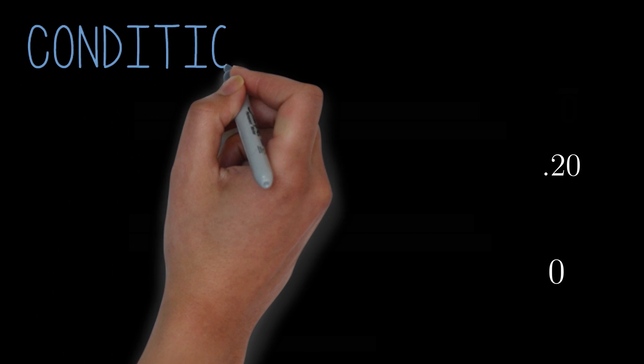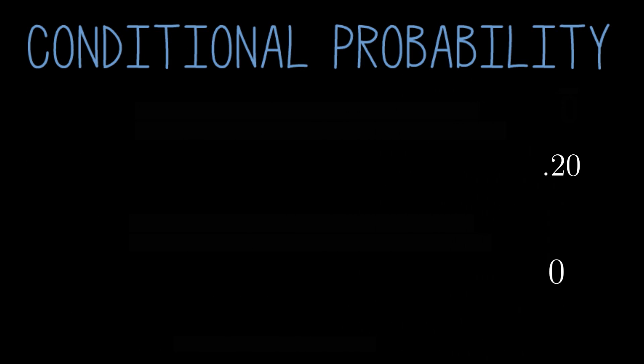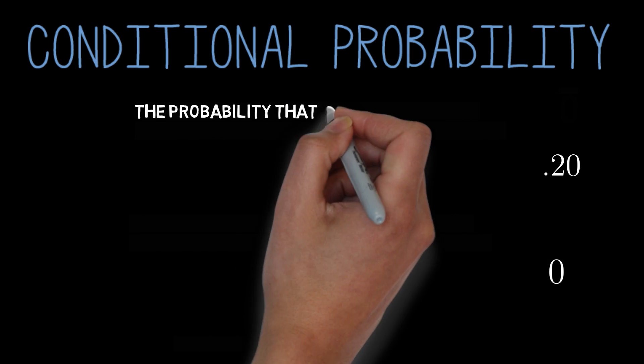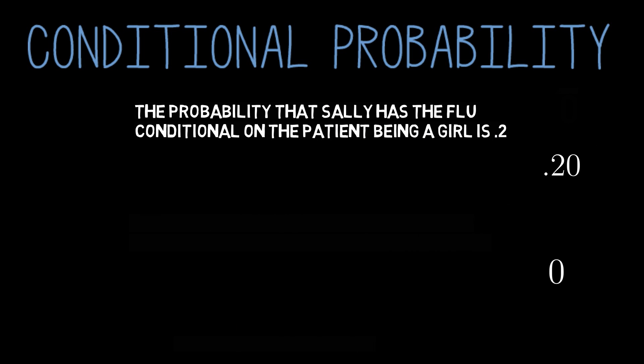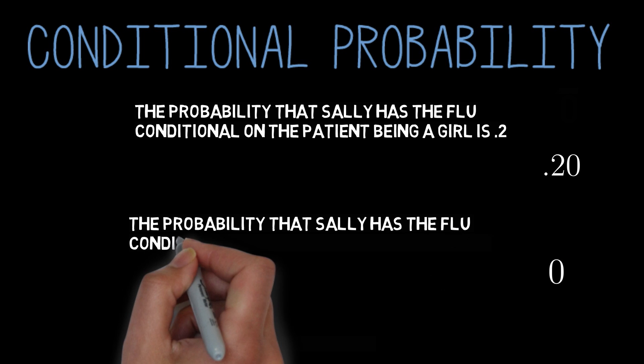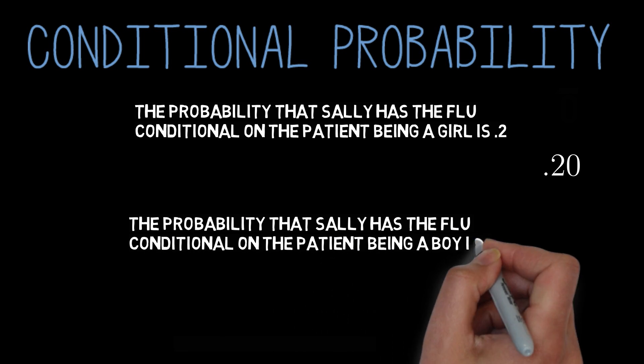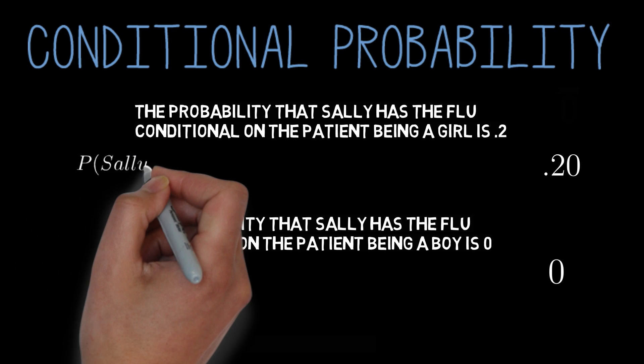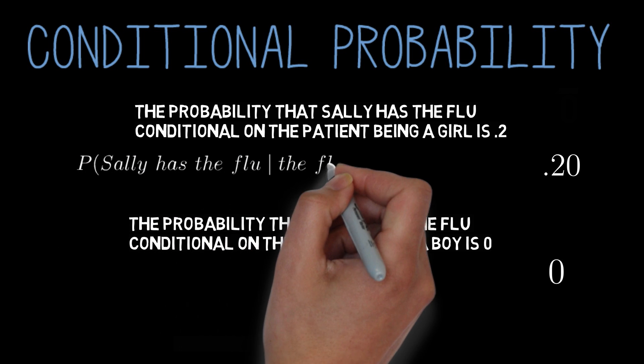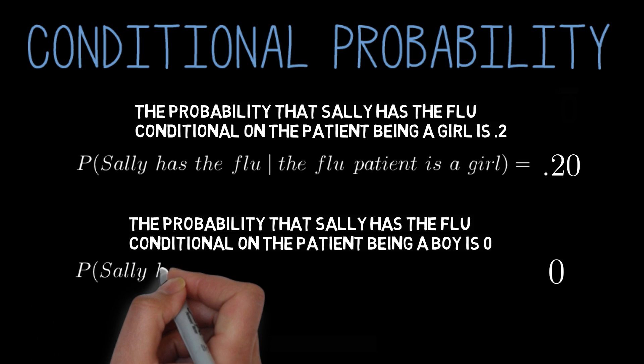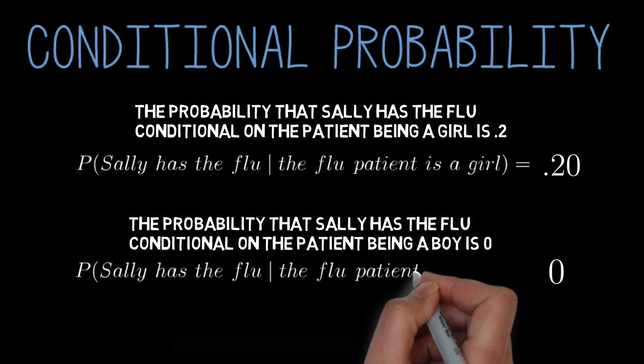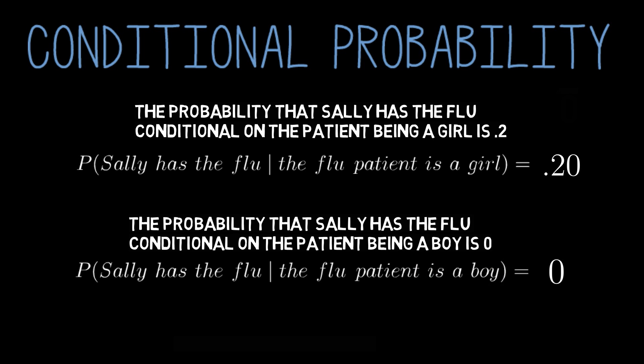We'll call these things conditional probabilities. Your probability that Sally has the flu conditional on the flu patient being a girl is .2. Your probability that Sally has the flu given that the flu patient is a boy is 0. As a shorthand, we'll write P of Sally has the flu given that the flu patient is a girl equals .2, and P of Sally has the flu given that the flu patient is a boy equals 0. The little vertical line tells you that we're talking about conditional probabilities.